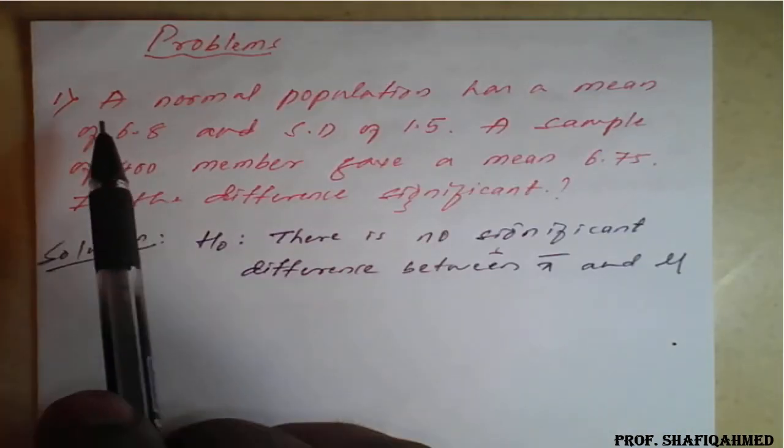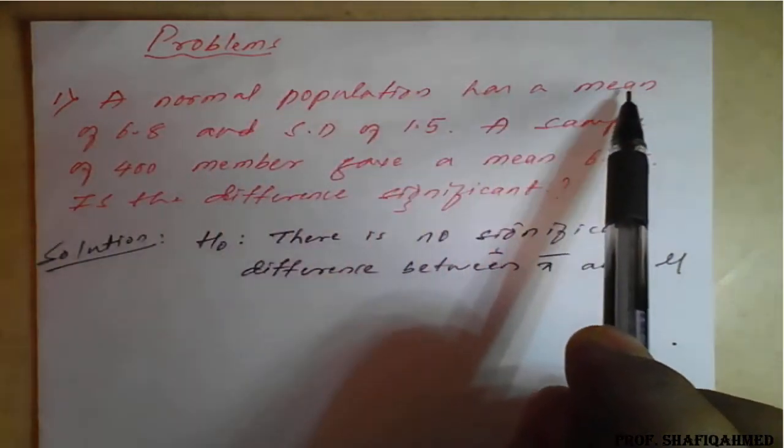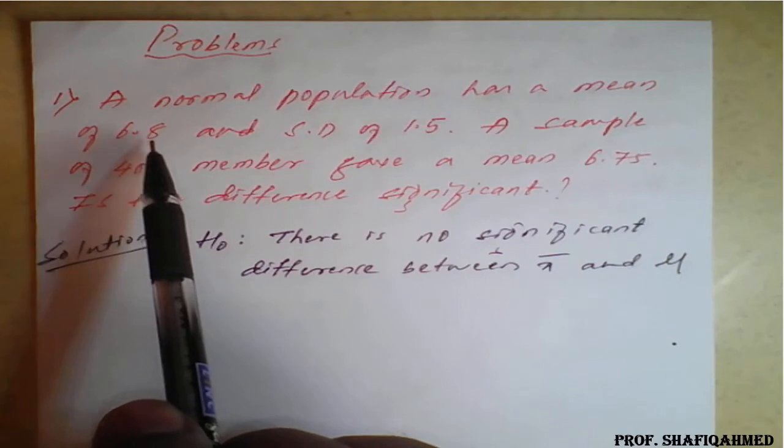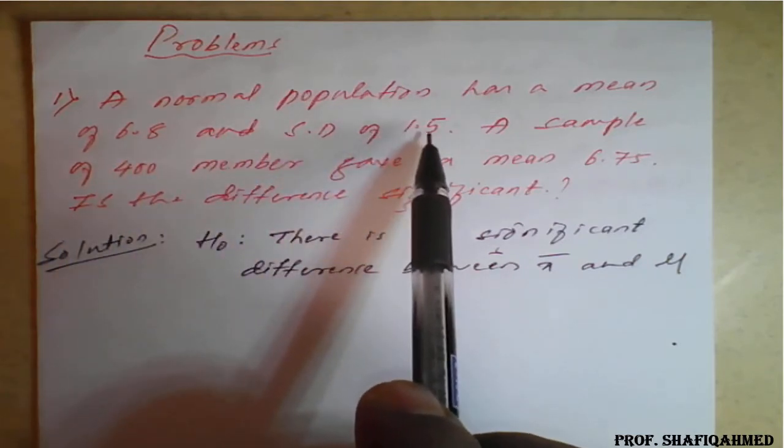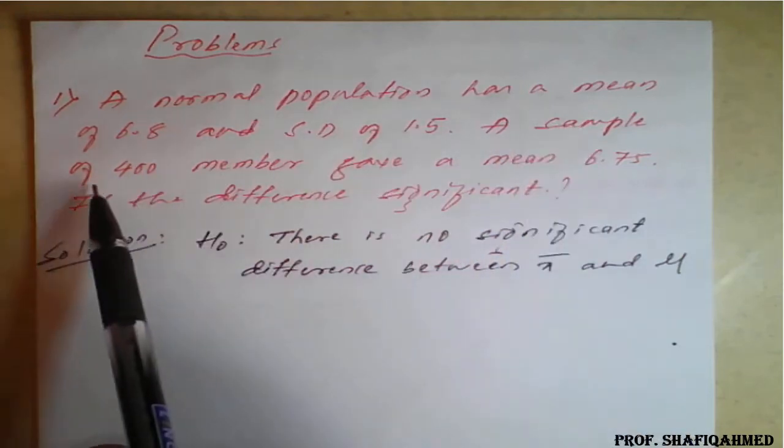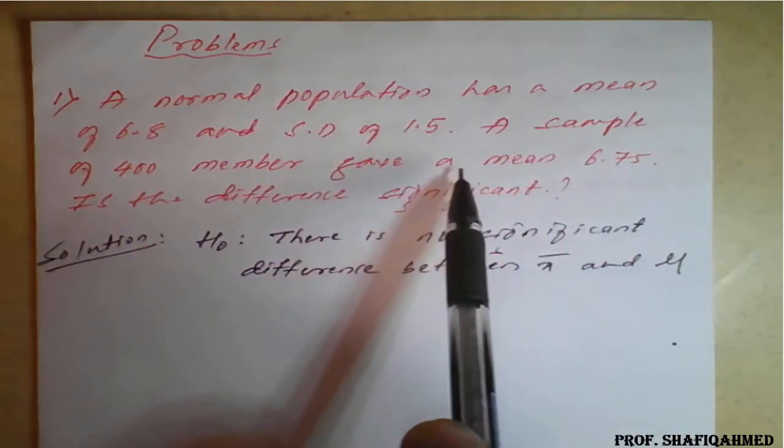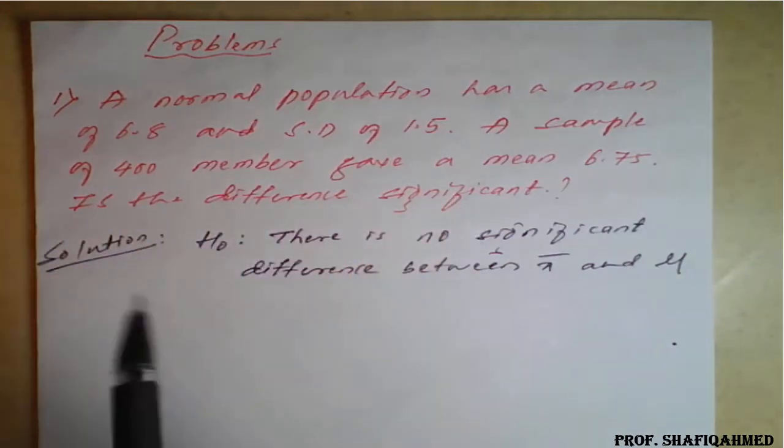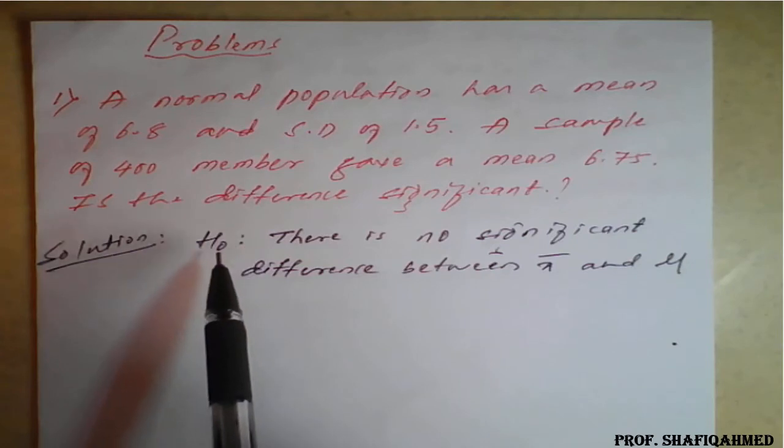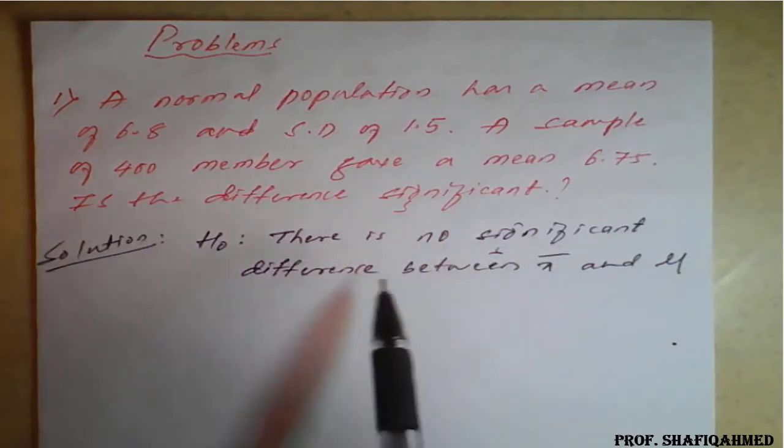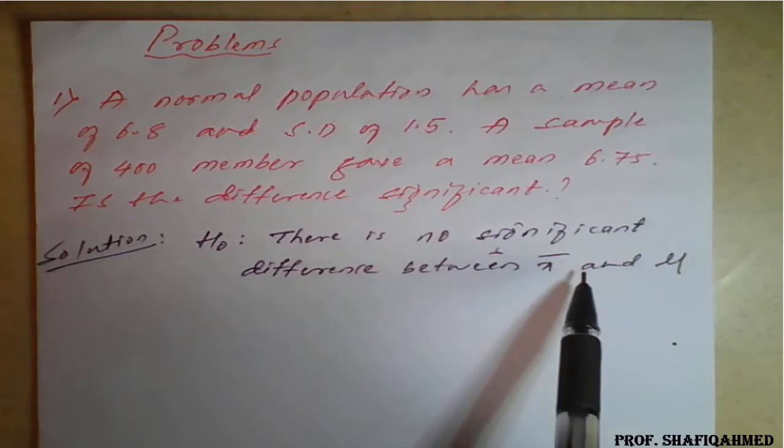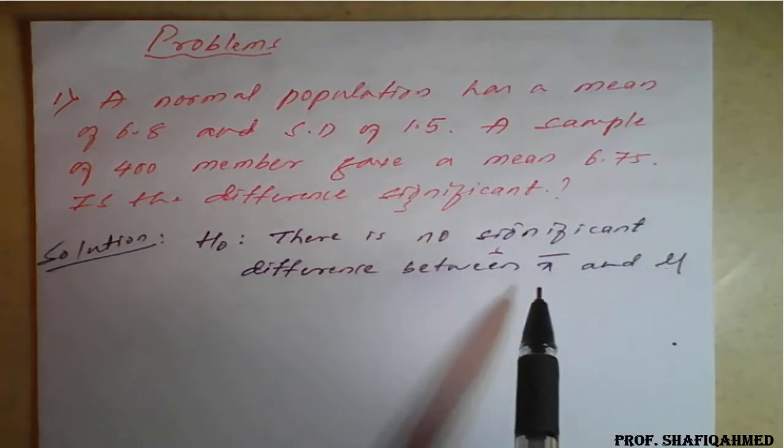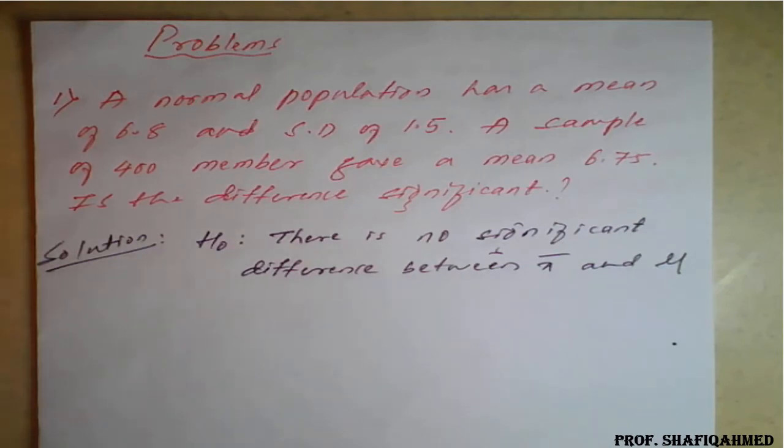The question is: a normal population has mean of 6.8 and standard deviation of 1.5. A sample of 400 members give a mean 6.75. Is the difference significant? Solution: I have taken H₀, that is null hypothesis, as there is no significant difference between x̄ and μ, means both are same. We will see whether my statement is true or false, whether to accept this hypothesis or reject this hypothesis.